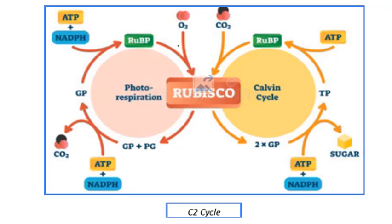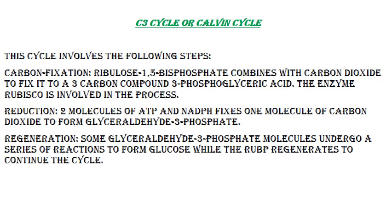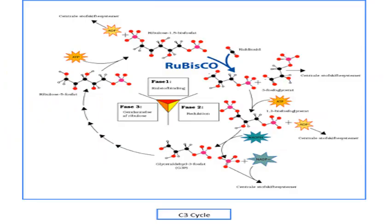C3 cycle or Calvin cycle: This cycle involves the following steps. Step 1 — Carbon fixation: ribulose 1,5-bisphosphate combines with carbon dioxide to fix it to a 3-carbon compound, 3-phosphoglyceric acid; the enzyme rubisco is involved. Step 2 — Reduction: 2 molecules of ATP and NADPH fix one molecule of carbon dioxide to form glyceraldehyde 3-phosphate. Step 3 — Regeneration: some glyceraldehyde 3-phosphate molecules undergo a series of reactions to form glucose while RuBP regenerates to continue the cycle. This is the flow chart of the C3 cycle.